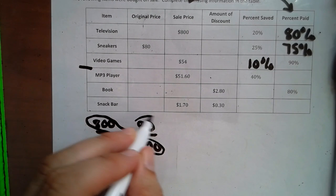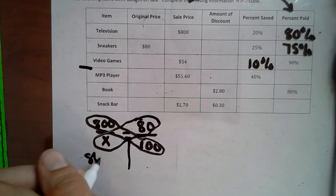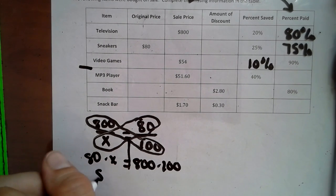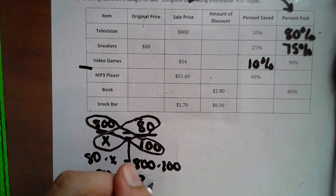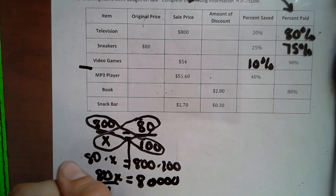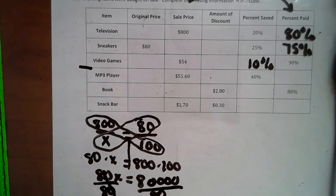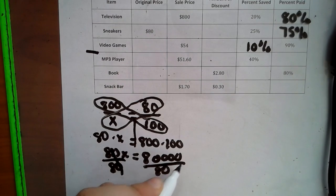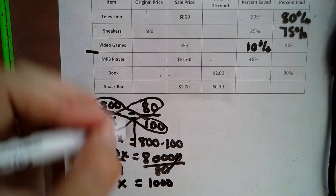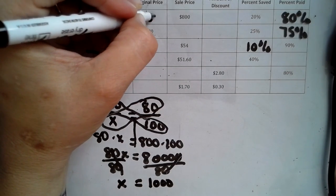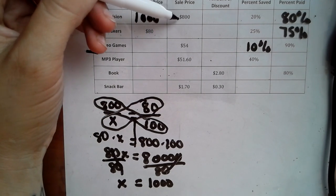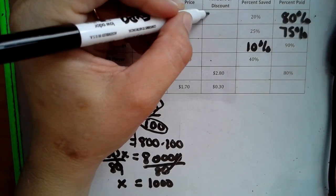So we can do our diagonal multiplication on this very first problem. So we have 80 times X equals 800 times 100. So we have 80X equals 8, and we have four zeros. We're going to divide by 80. And we can cross that over with zeros. We have 8,000 divided by 8, which is 1,000 equals X. So our original price of the item was $1,000. So if our original price was $1,000, and our sale price was $800, the discount there is $200.